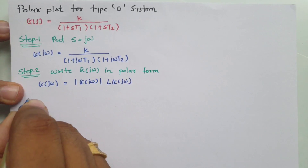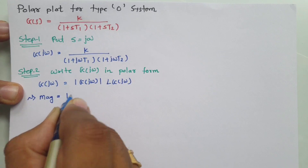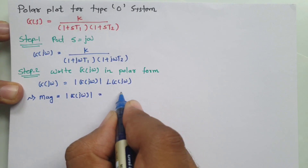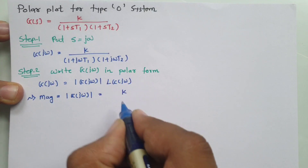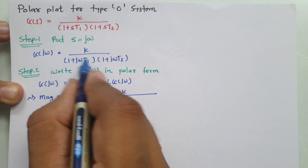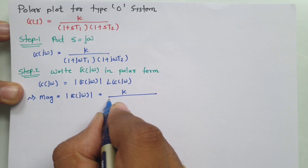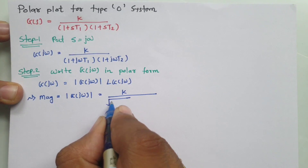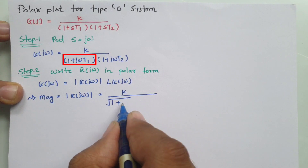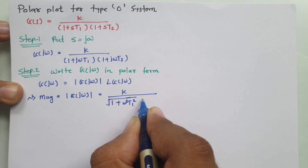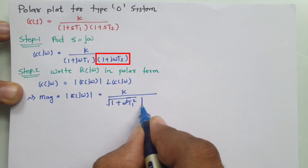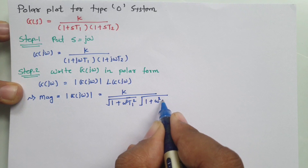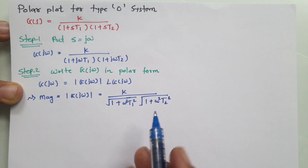The magnitude, which is the modulus of G(jω), is calculated based on the poles. For each pole, we take the square root of (real part squared plus imaginary part squared). For the first pole: square root of (1 + ω²T1²), and for the second pole: square root of (1 + ω²T2²). That is how we calculate the magnitude.